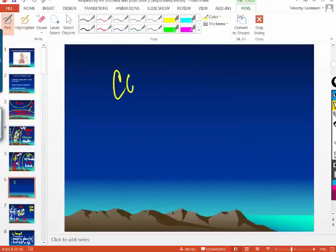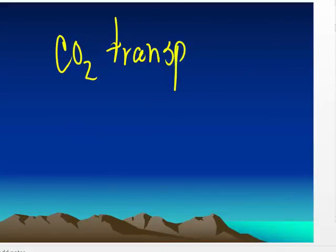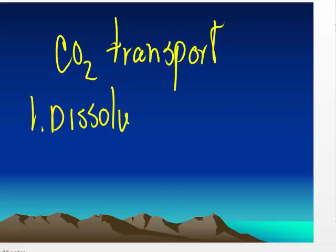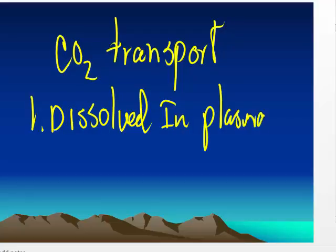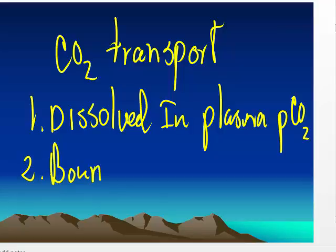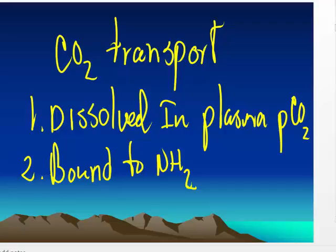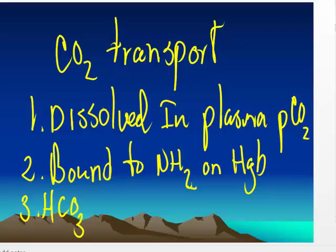Carbon dioxide is transported three ways: number one, dissolved in the plasma, measured as PCO2; number two, bound to the amino group on hemoglobin; and number three, transported in the plasma as bicarbonate.